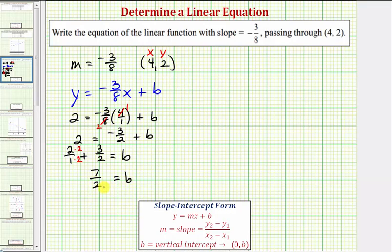And now that we know the value of b, we can write the equation for our linear function. We would have the equation y equals negative three-eighths x, plus b, which would be plus seven-halves.